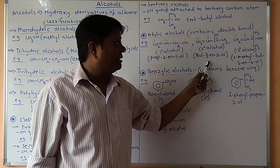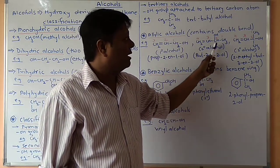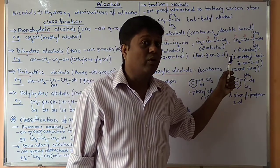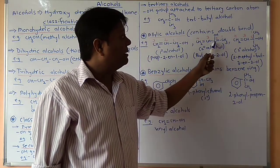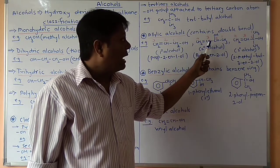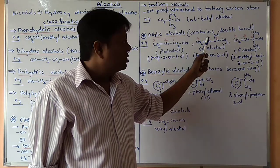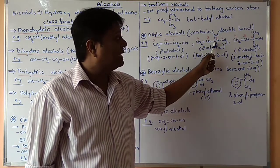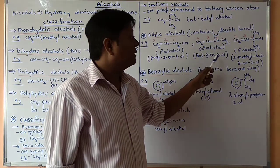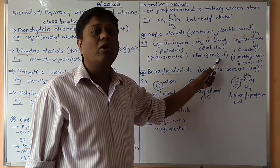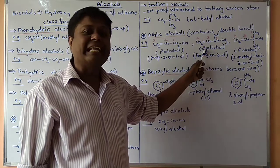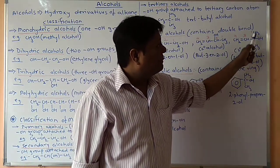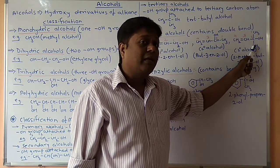The second allylic alcohol example is a secondary alcohol. With four total carbons and a double bond after the third carbon, it is but-3-en and the hydroxy group is attached to the second carbon, giving but-3-en-2-ol. This is a secondary allylic alcohol.